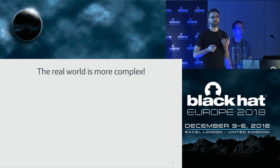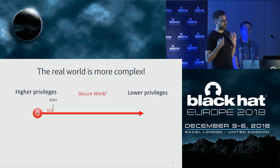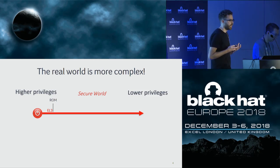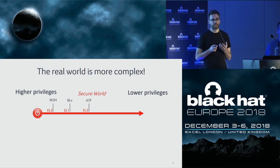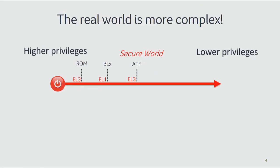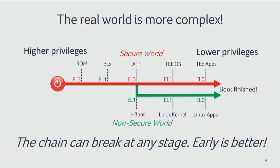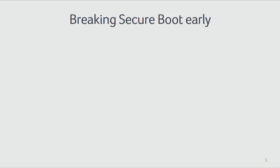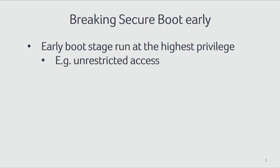The real world is more complex than just a few stages. The first ROM stage executes at a very high privilege level, and then additional stages run after it, with privilege levels decreasing gradually. Nowadays there are also different worlds running at lower privileges. Secure Boot covers that entire chain. Breaking in early is better because it allows you to run code at a high privilege level, giving you unrestricted access within the chip.